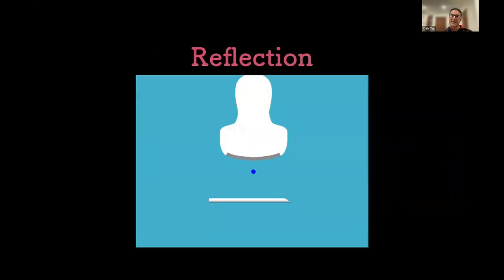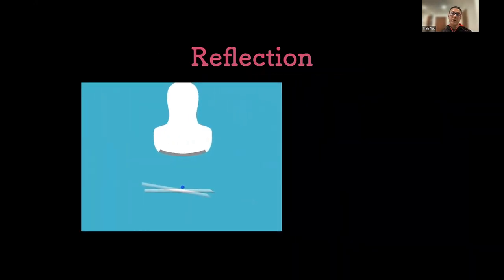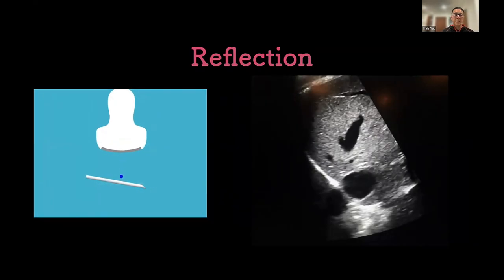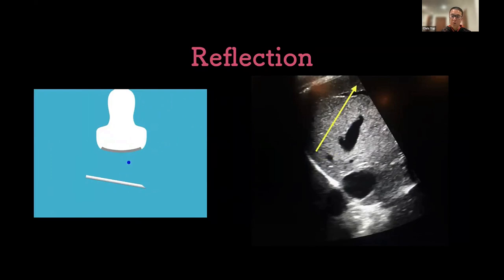Let me go through some basic ultrasound physics. Sound waves travel in all directions, but when they hit something they come back — that's reflection. Here's our probe hitting some material, in this case a needle. If it hits at the right angle it comes back at 90 degrees, but if it goes off at a slightly different angle it won't return to the probe correctly, and the machine has to interpret this.